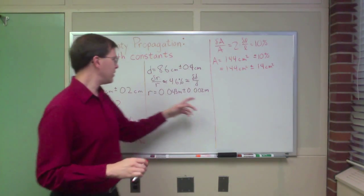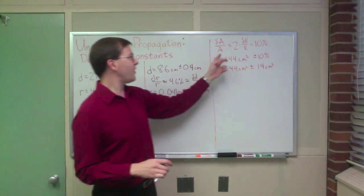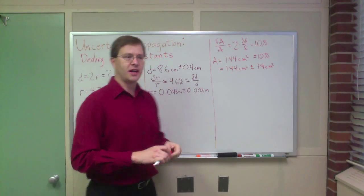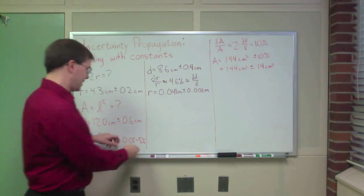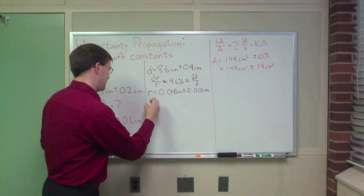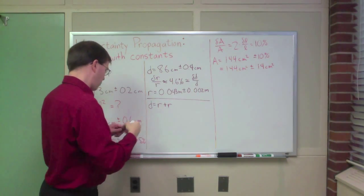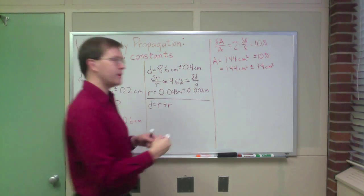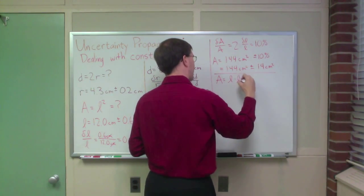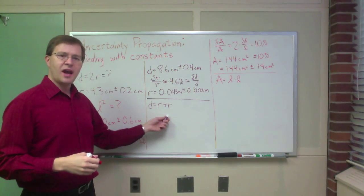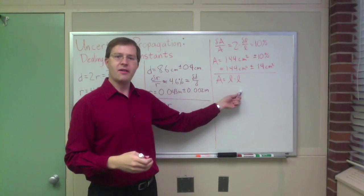You can see the parallels here. In the case of D, I doubled the absolute uncertainty. In the case of A, I doubled the relative uncertainty, because sums, you can think of this thing as being kind of like D equals R plus R in the same way that you can think of this one as being kind of like A equals L times L. And so sums have to do with absolute uncertainty. Multiplication products have to do with relative uncertainty.